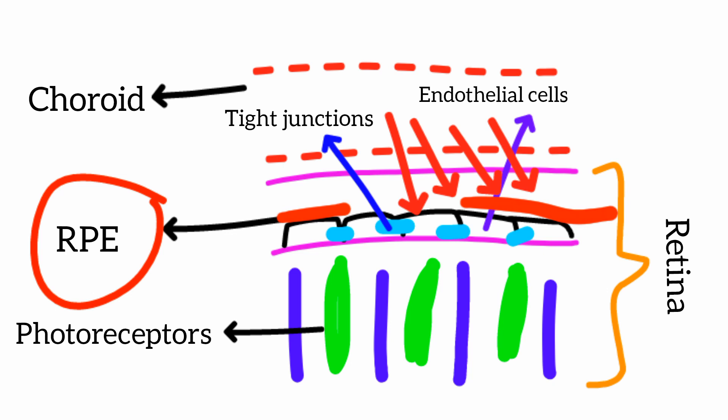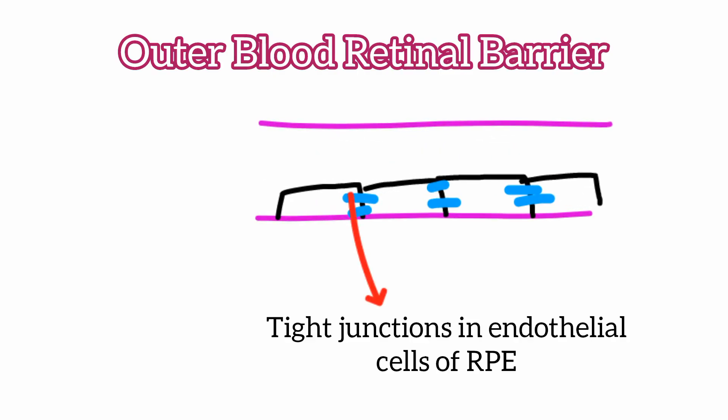At the level of the retinal pigment epithelium, the endothelial cells have tight junctions — they are strictly attached to each other — so that blood is not allowed to pass from the choroid into the neurosensory retina or the photoreceptors. This tight junction between endothelial cells in the retinal pigment epithelium is the outer blood retinal barrier, which is formed by tight junctions of endothelial cells at the level of the RPE layer.